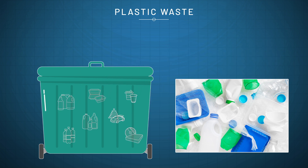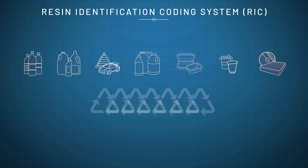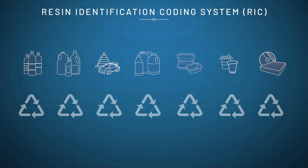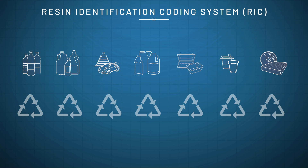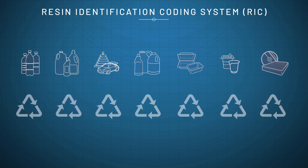Therefore, the recycling of plastic is of critical importance to attain a sustainable society. The sorting of plastic waste according to the resin material is a critical step in the recycling process. Plastic materials are categorised by the Resin Identification Coding System, or RIC.